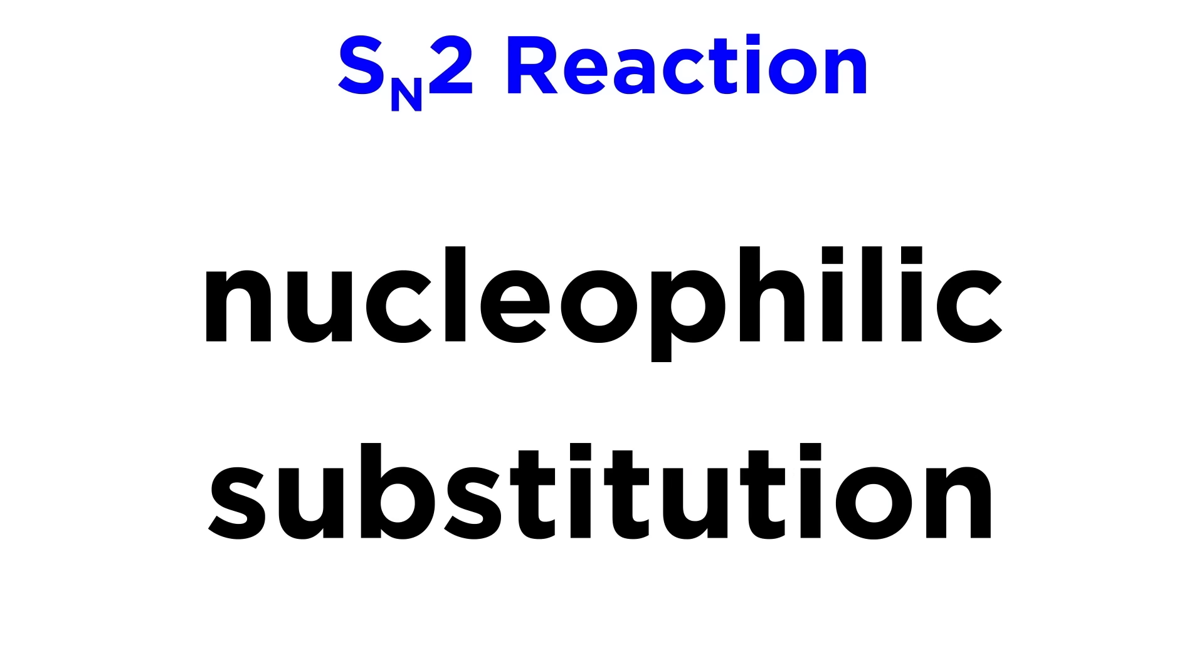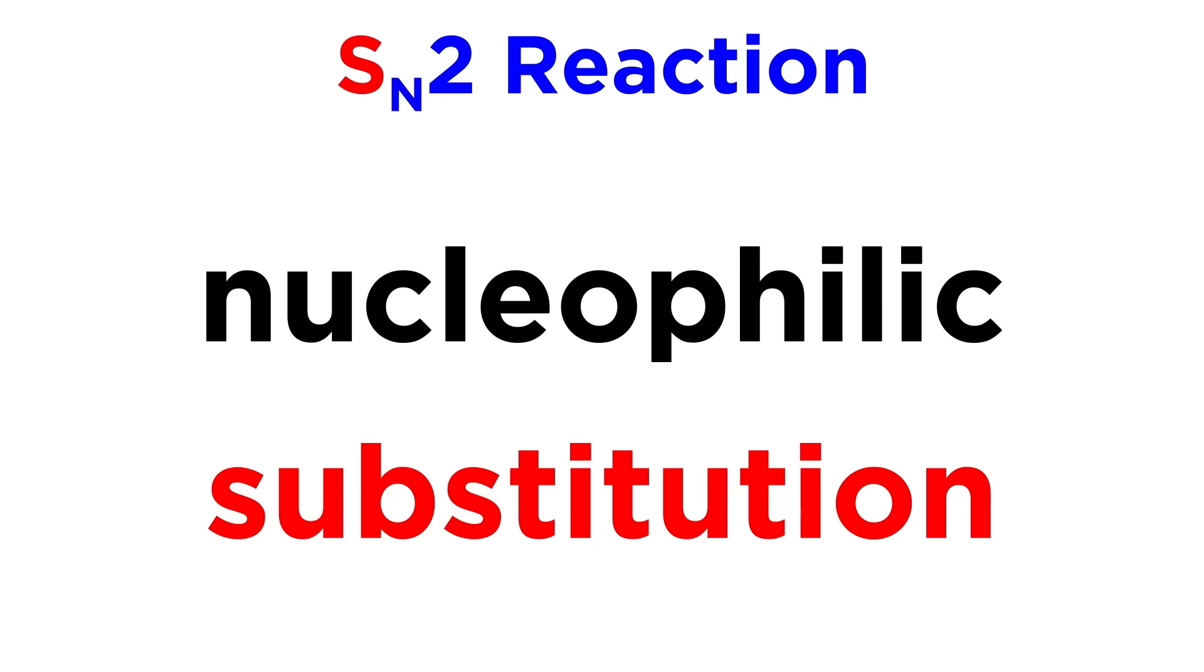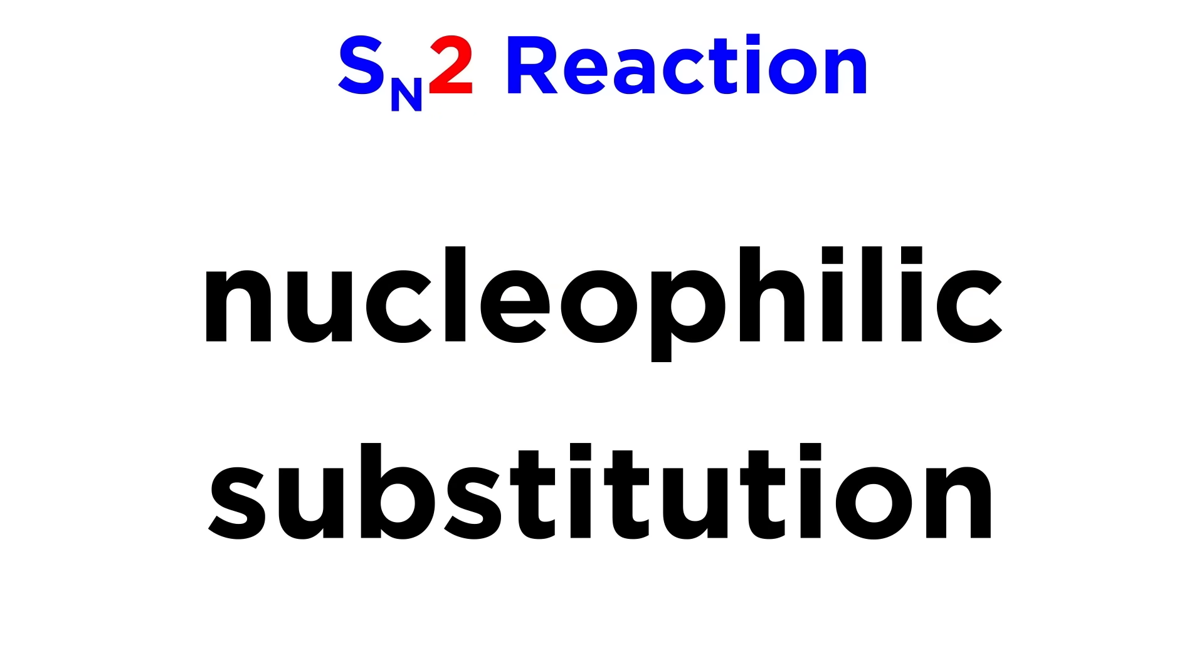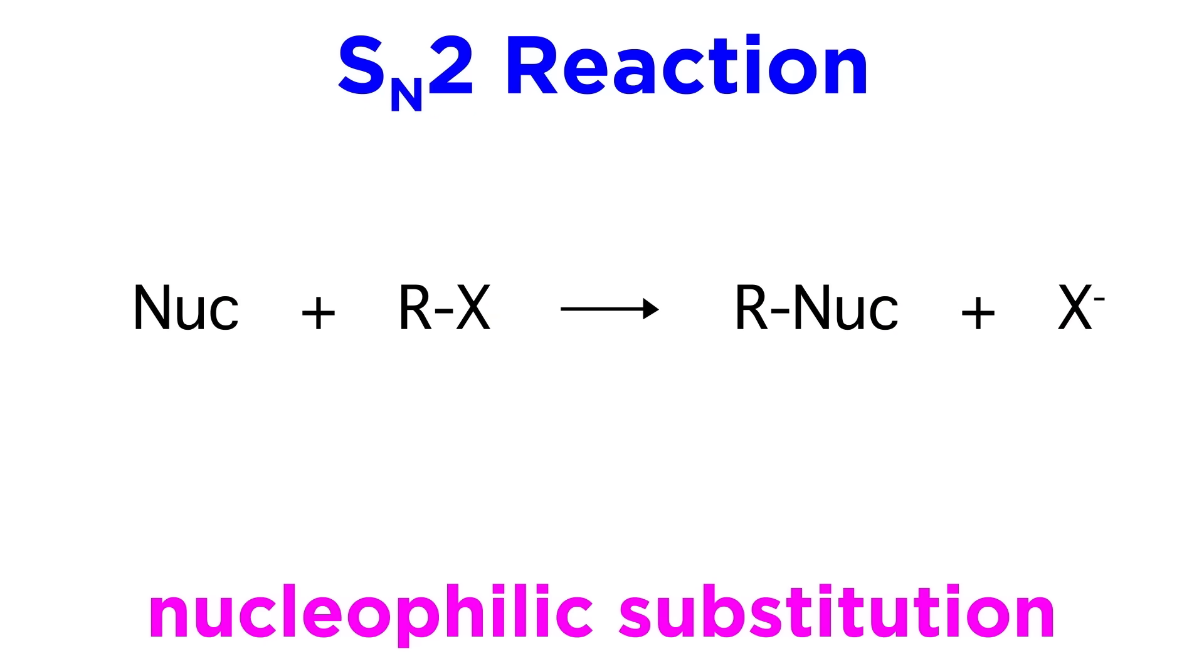Let's start by looking at the SN2 reaction. With the SN2 reaction, the S stands for substitution, and the N stands for nucleophilic. We will get to the two in a moment, but let's recall that with a nucleophilic substitution reaction, something called a nucleophile is attacking something else called an electrophile and making a substitution, so one part of a molecule is swapped out for something else.